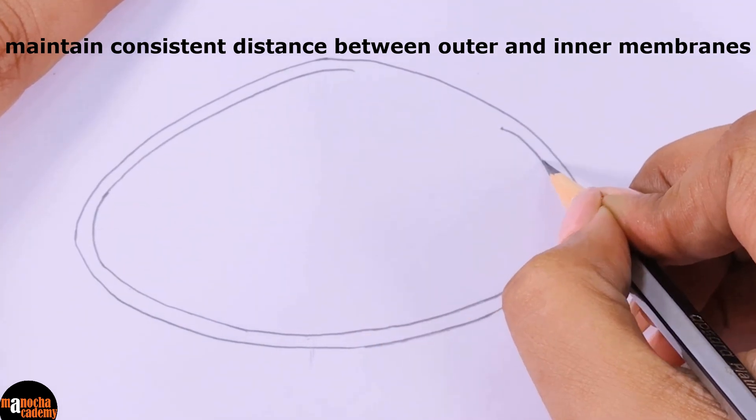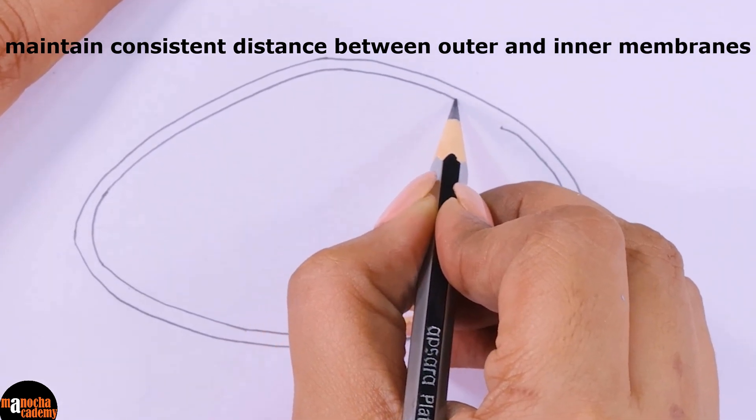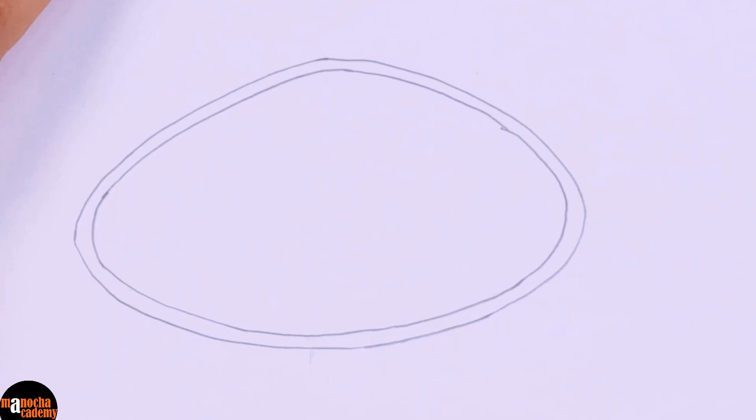Please have a steady hand and when you are drawing the diagram make sure that the distance between the two remain the same. That is the inner membrane. Now we are going to draw the thylakoids inside.